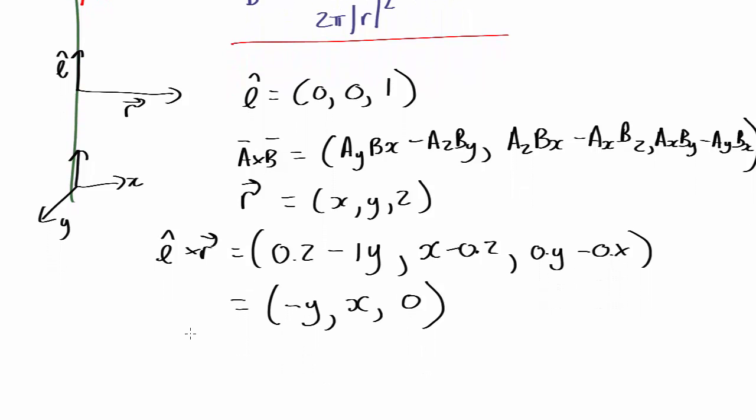So the magnetic field in vector form is going to be μ₀I over 2π|r|² times (-y, x, 0).